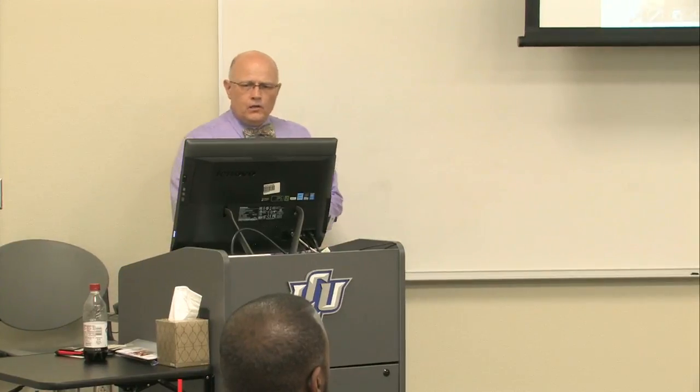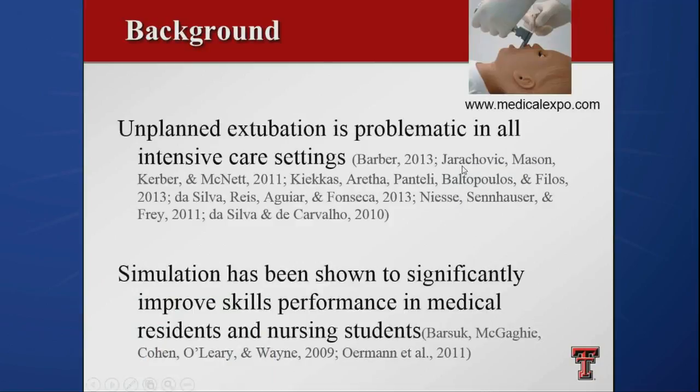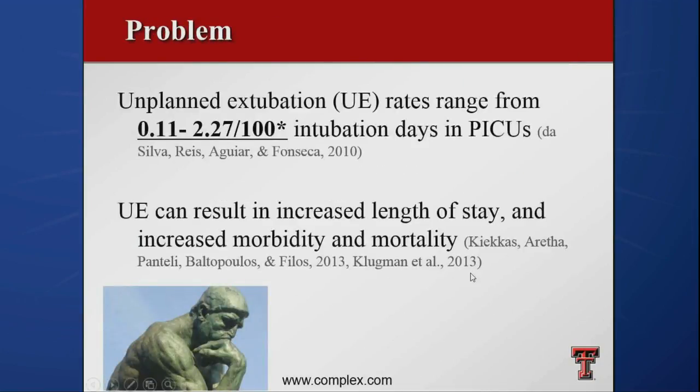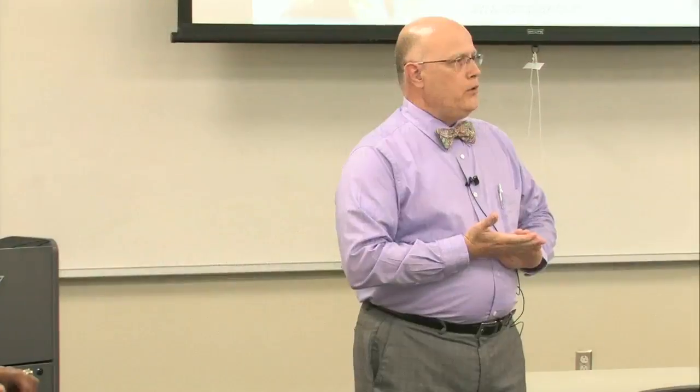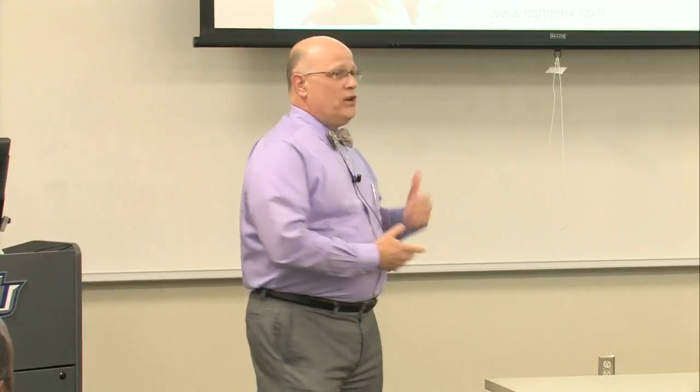We know from the literature that we can improve things with simulation. The numbers you're going to see are based on 100 ventilator days — that's the national standard for measuring unplanned extubations. So a number like 0.11 means 0.11 unplanned extubations per 100 ventilator days. The range I found in the literature was from 0.11 to 2.7 per 100 ventilator days.